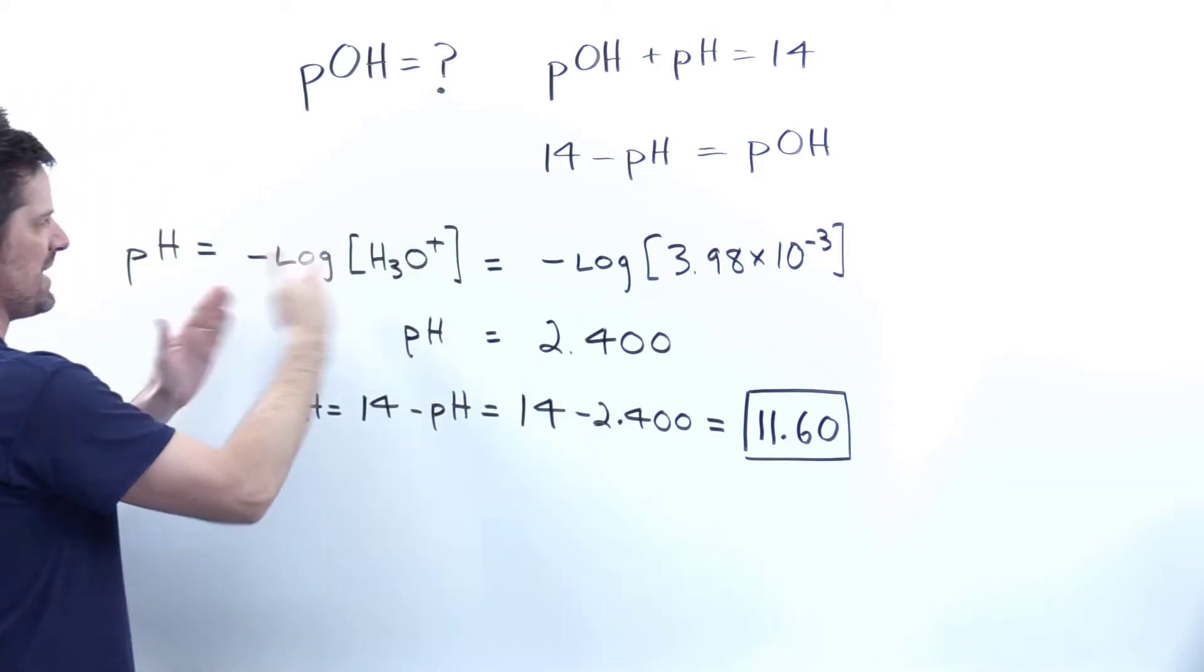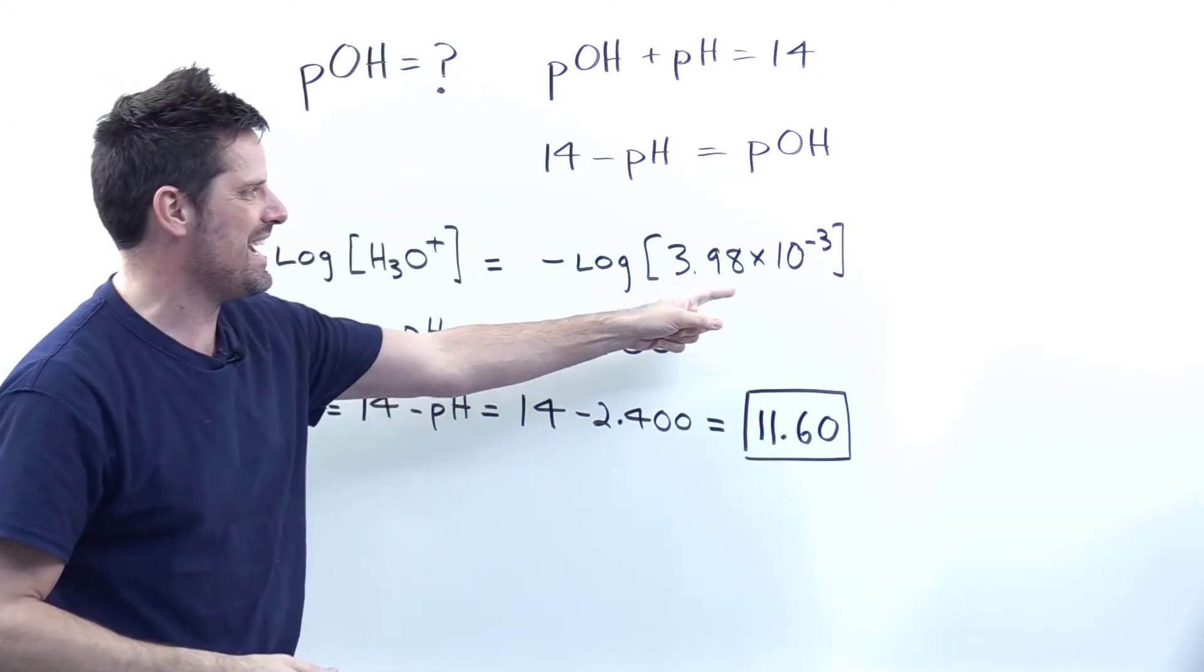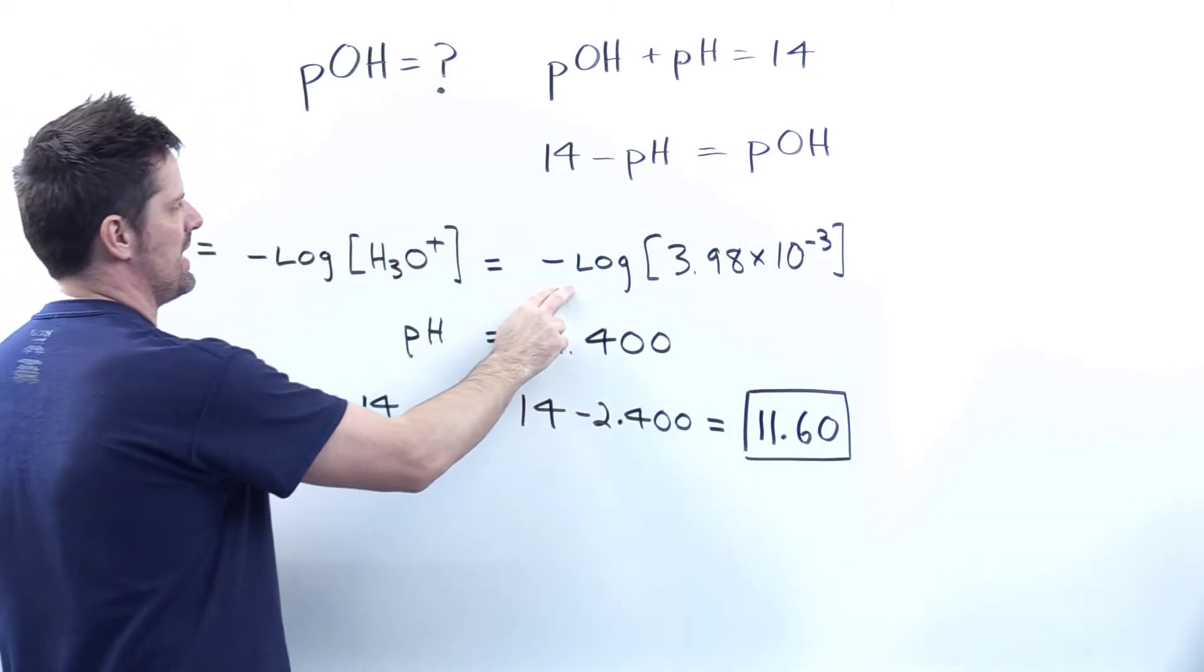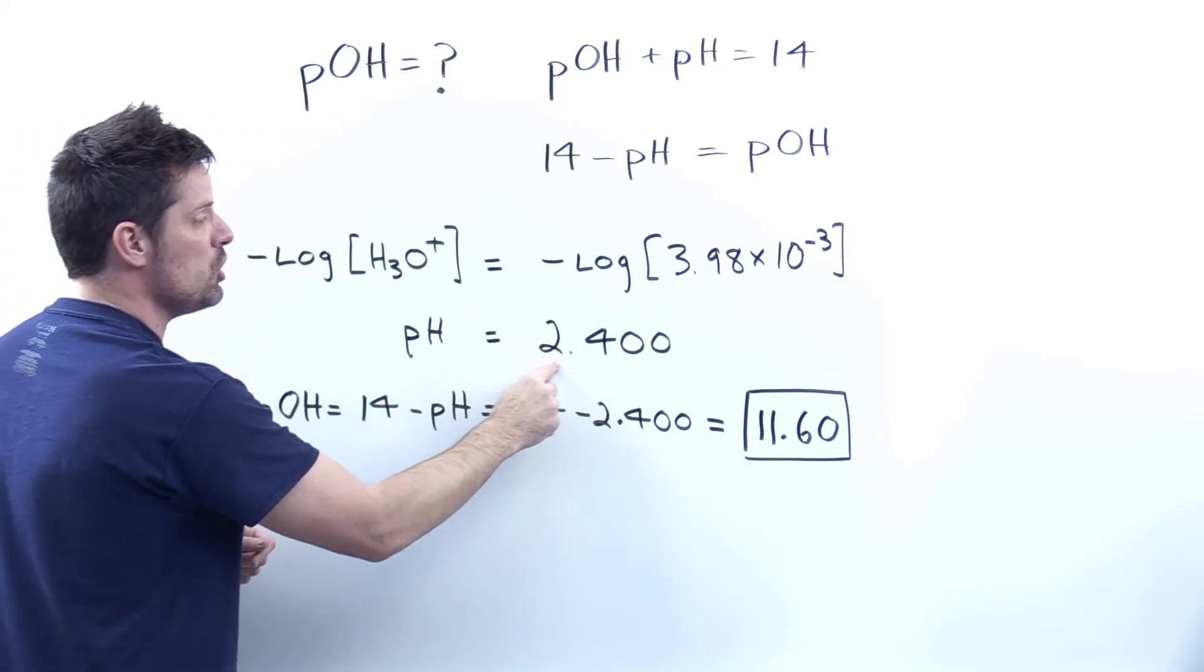Thus, we can translate that over here to negative log of the hydronium concentration, 3.98 times 10 to the minus 3. I threw that in my calculator earlier, and I determined that this number, and don't forget your negative sign here, comes to 2.400.